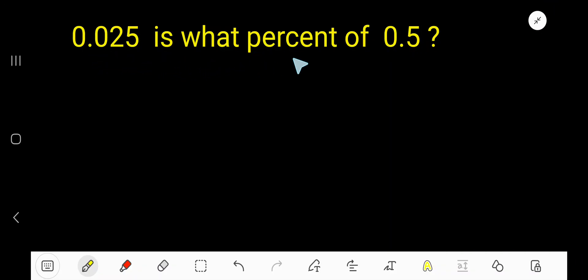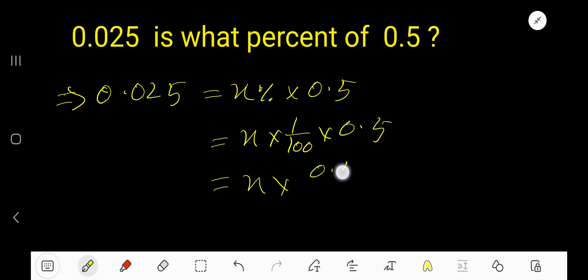0.025 is what percent of 0.5? Let me translate: 0.025 is means equal sign, what means let's say x percent, of means multiplication sign, then 0.5. Instead of percentage you can write 1 over 100 times 0.5. You can rewrite this as 0.025 equals x times 0.5 over 100.